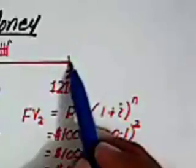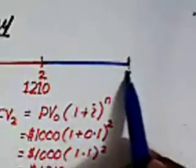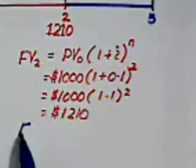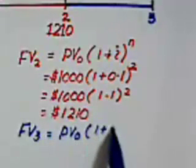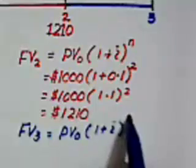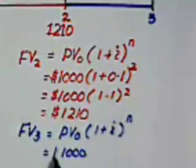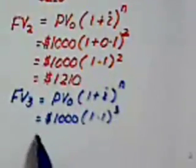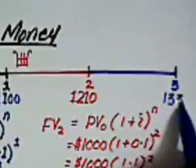If we want to know how much would be the future value of this one thousand at the end of three years, that would be: future value at the end of three years equals to the present value at time zero multiplied by one plus rate of annual compound interest raised to the power time duration. So this is one thousand dollars multiplied by 1.1 raised to the power three, and this is equal to one thousand three hundred and thirty-one dollars.